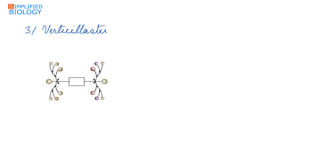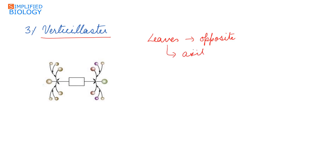The last type is verticillaster. In verticillaster, the plants usually have opposite phyllotaxy, meaning the leaves grow opposite to each other on the main stem. The inflorescence develops at the axil of the leaf. In the axil of the leaf, first two branches develop in opposite directions, each terminating with a flower, and from those two branches develop two more branches in opposite directions, each also terminating by a flower.